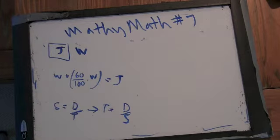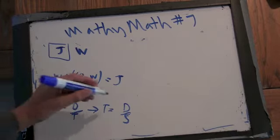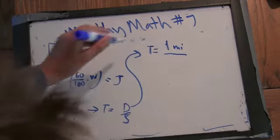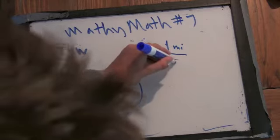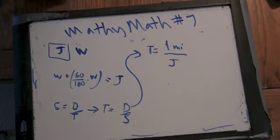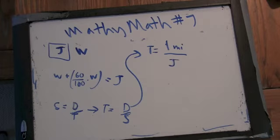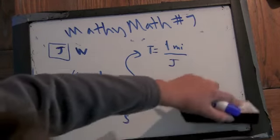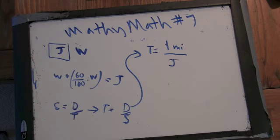So in this case, the distance is one, one mile over J. The time it takes her to jog a mile is one over J. Alright, let's go to part B. We've gone five minutes.